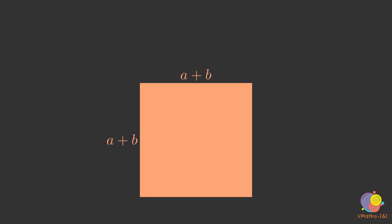Consider a square of length a plus b. Divide each side of the square into two segments of length a and b respectively as shown in the figure.